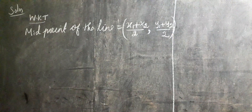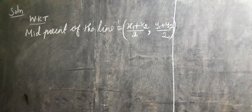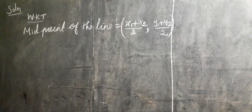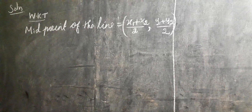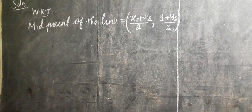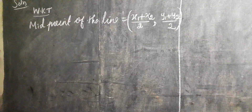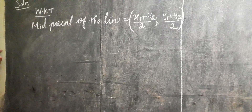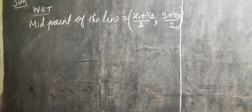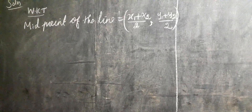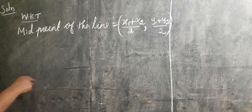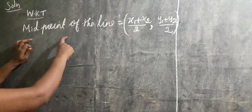In the previous class you had studied the distance between any two points. The formula is: square root of (x2 minus x1) whole square plus (y2 minus y1) whole square. In this exercise we have to apply the midpoint formula.